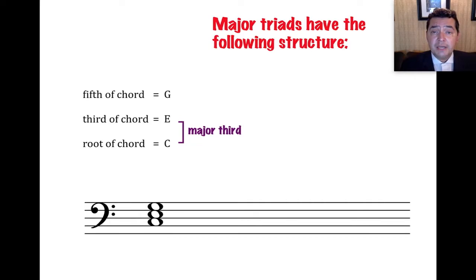A major triad must have a major third above the root. Next, we stack a minor third. So from that E, we go up a minor third to G to complete our triad. So we have major third, minor third in the major triad. Finally, notice that the interval from C up to G is a perfect fifth.